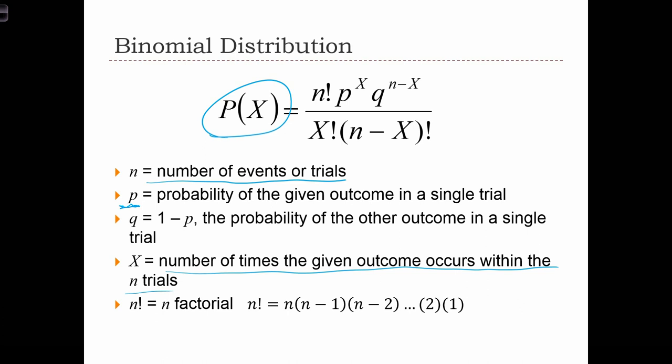q is just the probability of the complement, or the probability of the other outcome. Because in this case, we are only dealing with binomial experiments, the complement is just a failure on any given experiment.